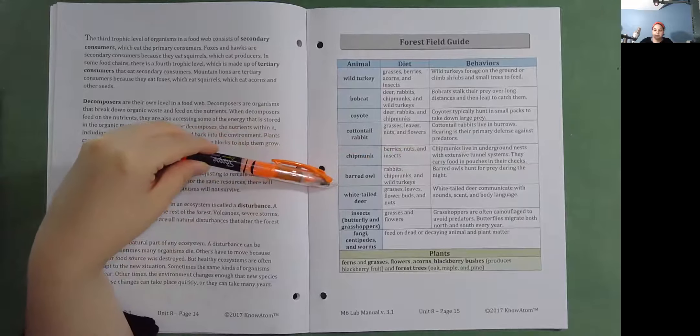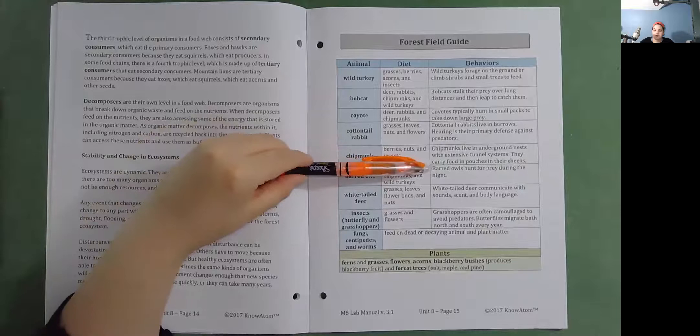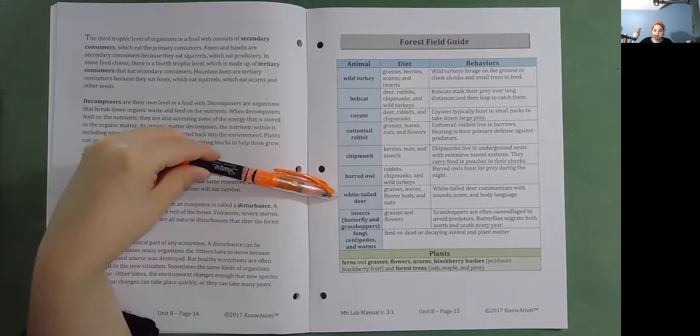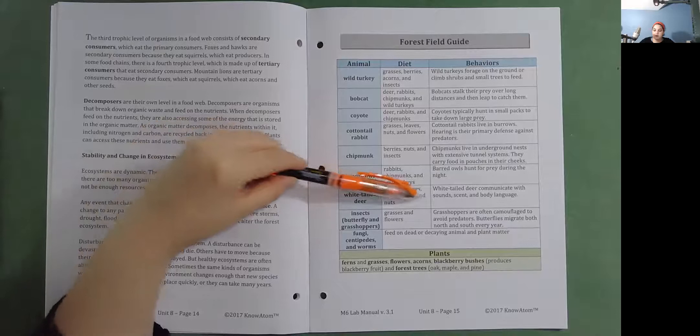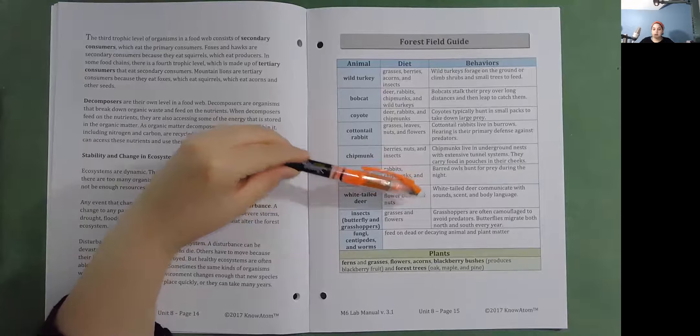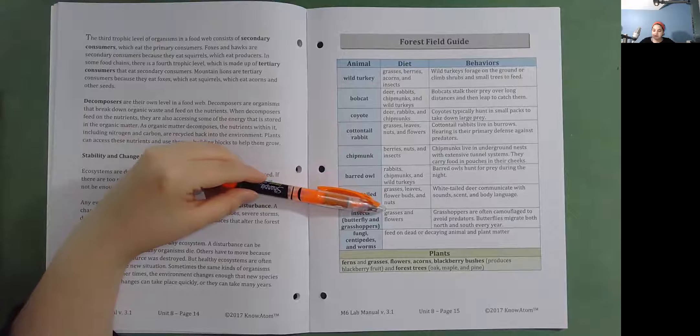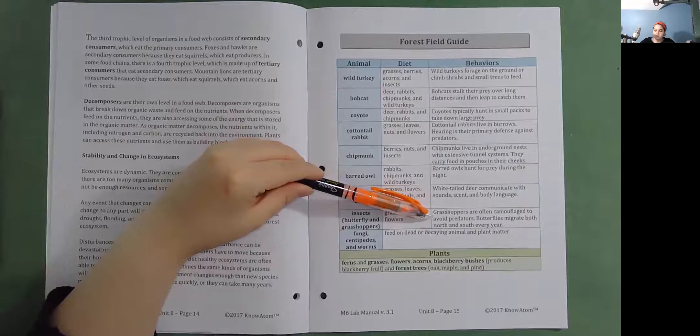Barred owl. Eat rabbit, chipmunks, and wild turkeys. Barred owls hunt for prey during the night. White-tailed deer. Eat grasses, leaves, flower buds, and nuts. White-tailed deer communicate with sound, scent, and body language. Insects: Butterflies and grasshoppers. Eat grasses and flowers. Grasshoppers are often camouflaged to avoid predators. Butterflies migrate both north and south every year.